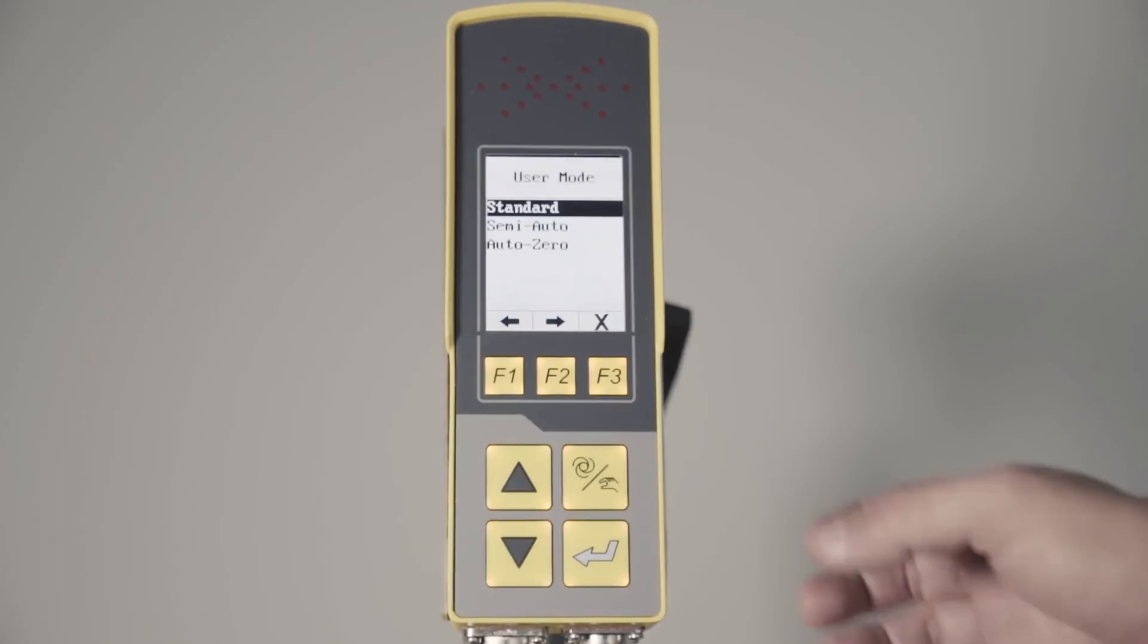User mode, standard. Semi-auto is for mills and auto zeros for mills as well.